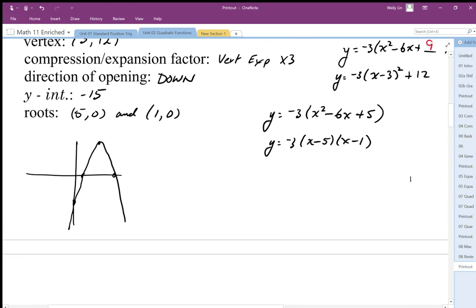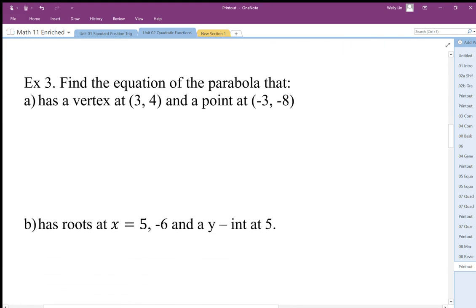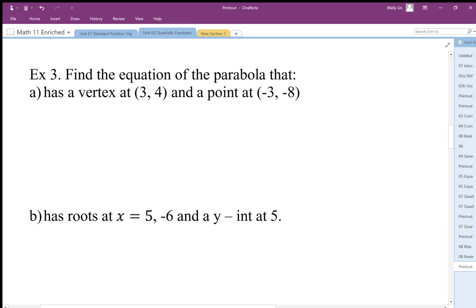So we have to find the equation of these parabolas. We're given the vertex and a point. If we're given a vertex and a point, this leads us towards writing it in the vertex form or the graphing form. When we do this, we're going to write in the vertex: y = a(x - 3)² + 4.